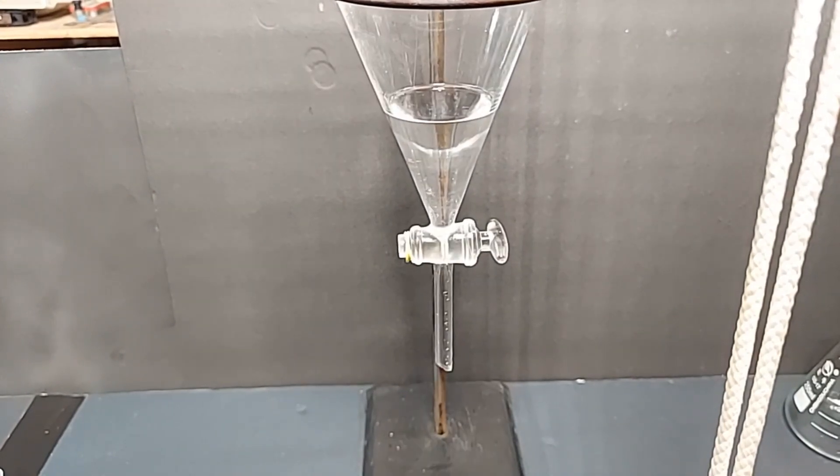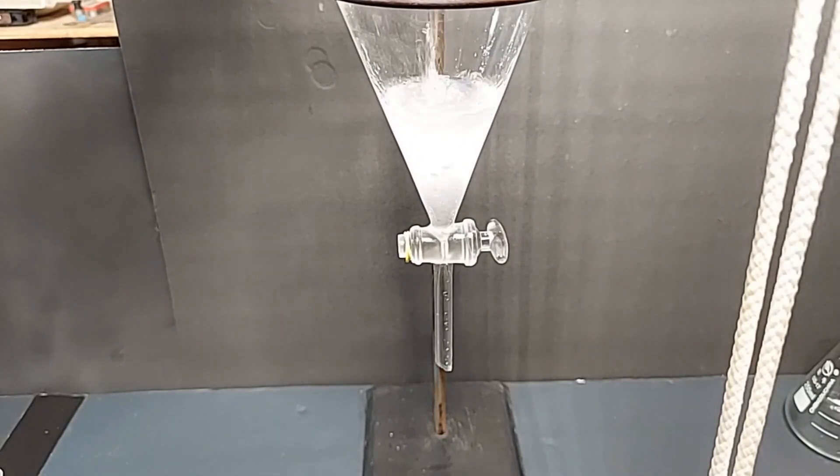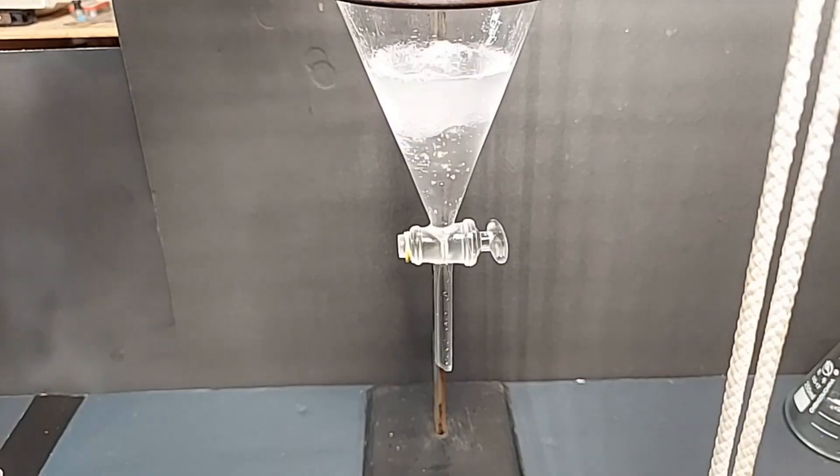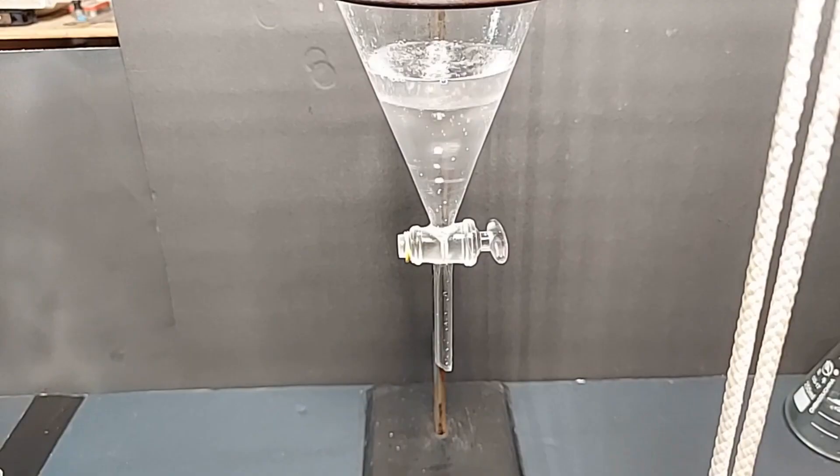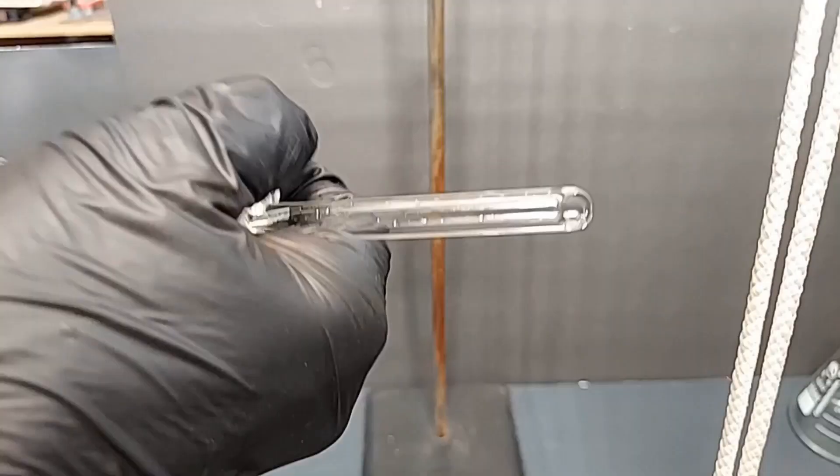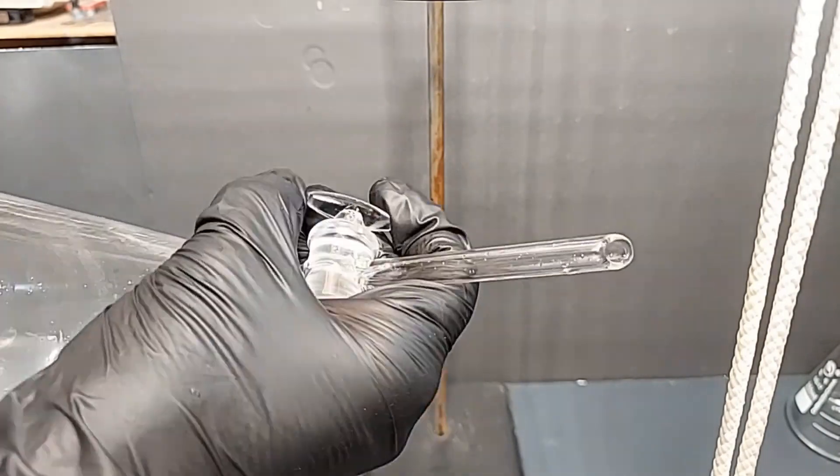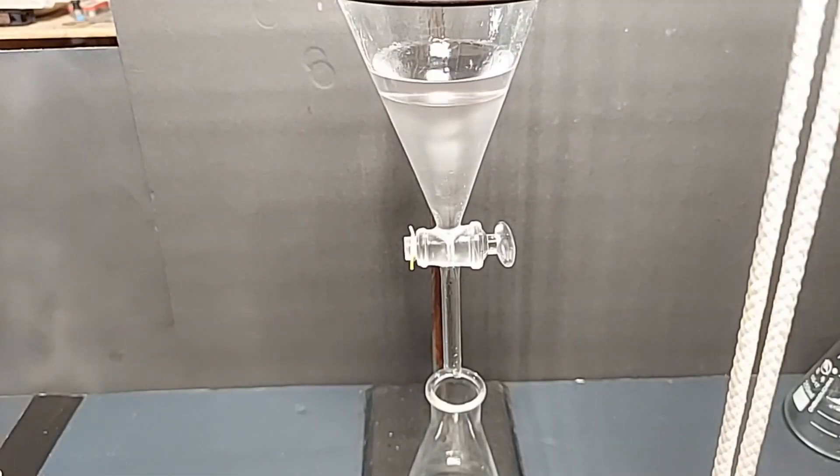I'm now going to do two washes with the sodium bicarb solution, which I made with five grams of sodium bicarb and 50 milliliters of water. I'm only going to show you one because it would be boring otherwise. This is to remove most of the acid that's in there. But you can see bubbling. With the first one, I'll be back when I'm ready to do the sodium chloride solution.